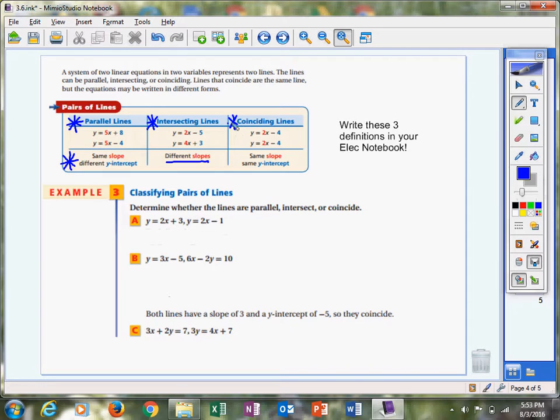This last one might be some new terminology for you. We call them coinciding lines. What that means is it's the same line graphed on top of itself. So write those down in your electronic notebook. They would have the same slope, same y-intercept. Write those three down and distinguish between them, whether it's parallel, intersecting, or coinciding.